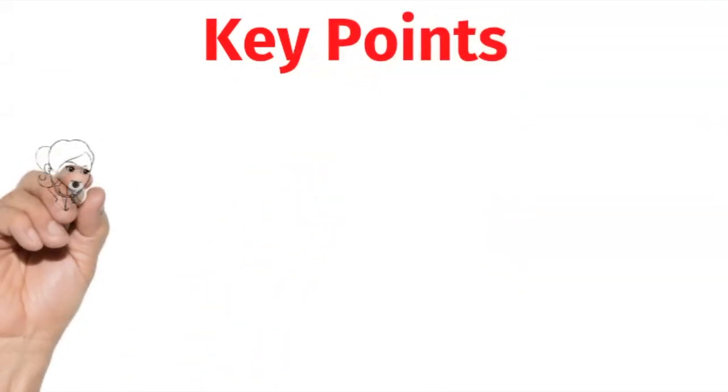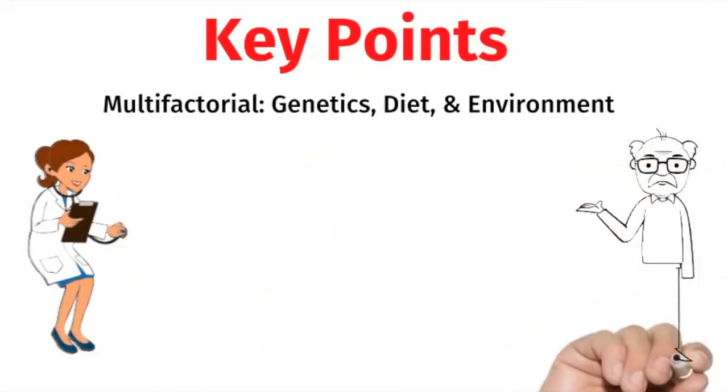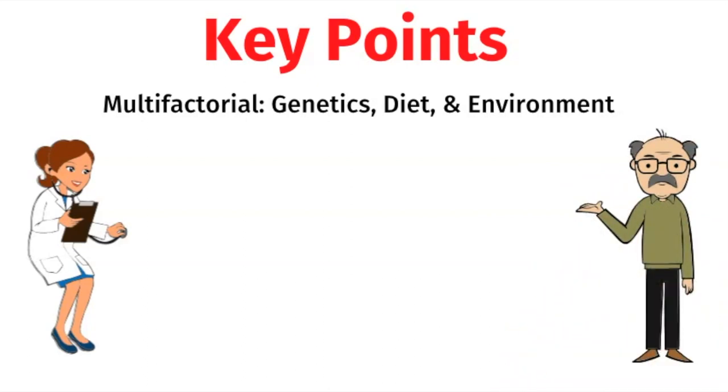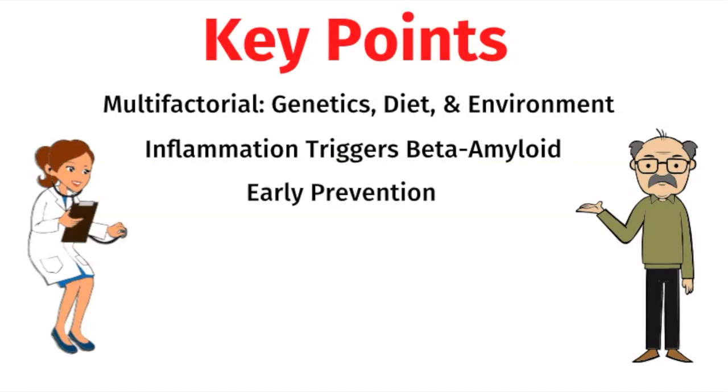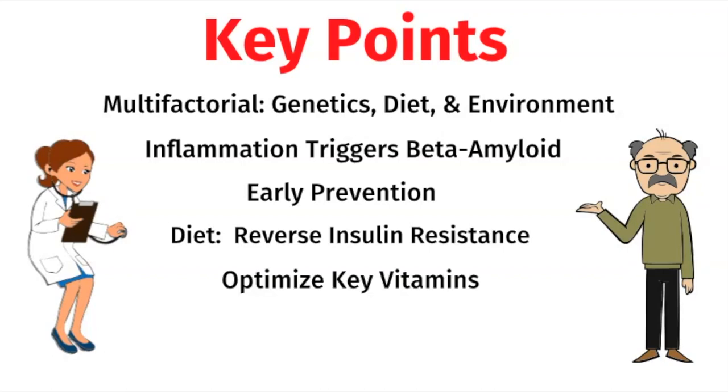In summary, these are the key points. The cause of Alzheimer's disease is multifactorial, meaning it's a combination of genetics, diet, and the environment. In Alzheimer's disease, inflammation triggers the production of beta-amyloid, which leads to a protective downsizing of the brain. Early prevention is key, so it's important to be proactive about your health. The main goal with the diet is to reverse any insulin resistance. Optimizing key vitamins and healing your gut microbiome can have a positive impact on your brain. Finally, lifestyle factors like exercise, sleep, and stress management can all have a huge impact in preventing Alzheimer's disease.